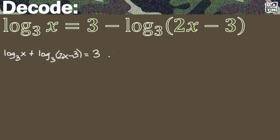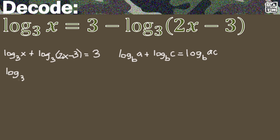We are adding two logarithms of the same base, so we use this property: if you have a logarithm of A to the base B and you add another logarithm of C to the base B — same base — you can combine them into one expression, giving you the logarithm of the product A times C to the same base B. This is only possible if the logarithms have the same base, and since the bases here are both 3, we simply multiply the coefficients x and 2x minus 3.